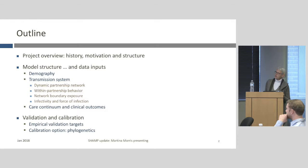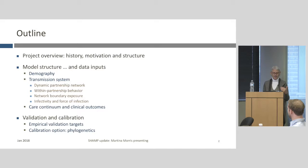Today I'll cover the SHAMP project overview, history, motivation, and structure, and spend most of the talk on model structure and data inputs. That's kind of where we are right now — we have an NIH R21 and we're about six months from the end of it. The last six months are going to be frenetic, because we've spent a long time on model structure and data inputs.